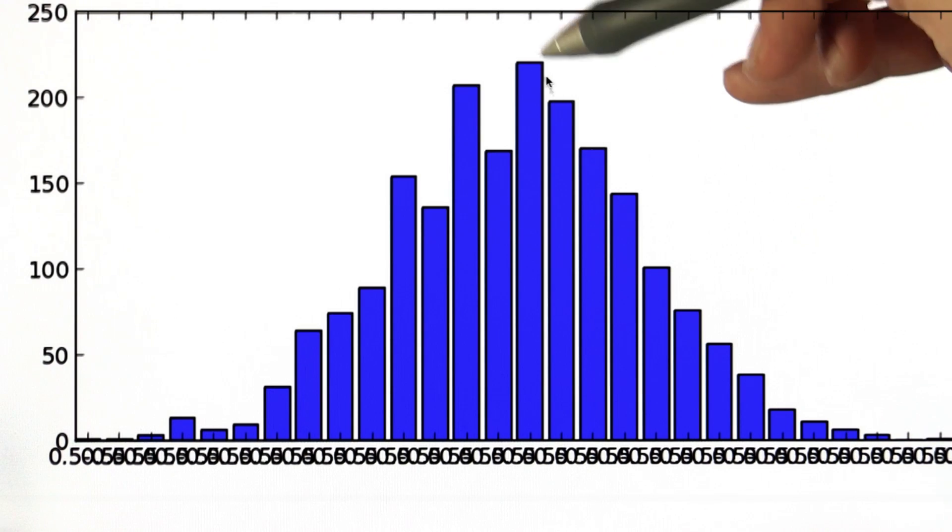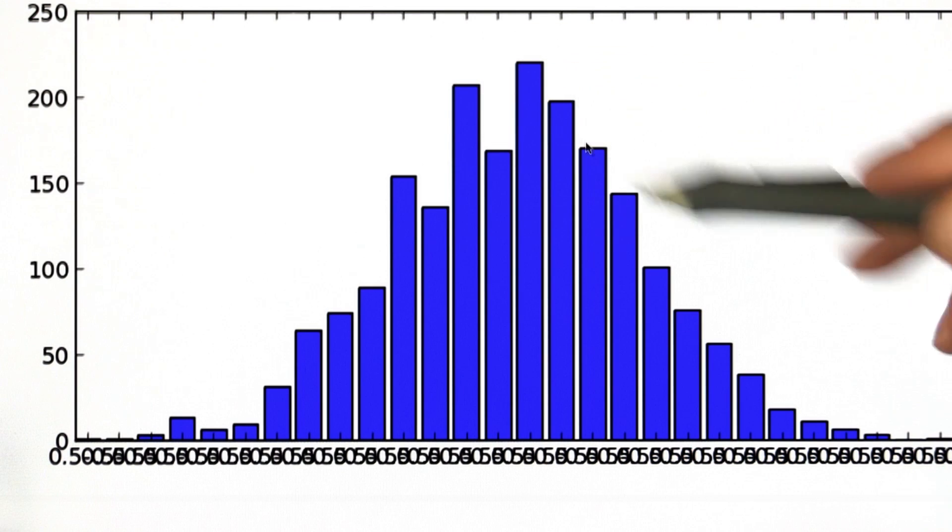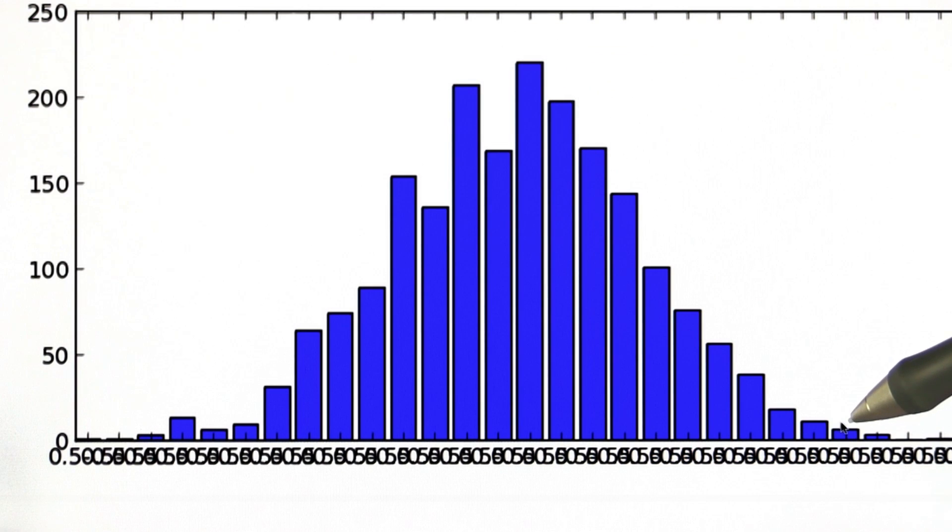You can think of this as a distribution over the means, outcomes, of large numbers of coin flips. It has an interesting shape. So go ahead and program it and see if you can reproduce these results.